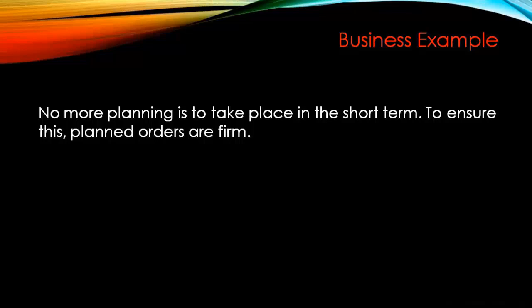In a real-time scenario, if you have a planned order scheduled for procurement or production next week, and you receive an urgent sales order with a delivery date in the next one day, the system will run MRP and try to create a new planned order for the new sales order before the old one — meaning it will push the dates of the old planned order out by more than one week.